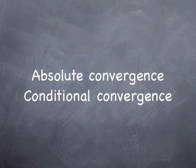Now we're going to see that series do not all converge the same way when they are convergent, and that we have a stronger kind of convergence than another. So we're going to discuss absolute convergence versus conditional convergence.